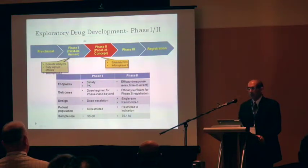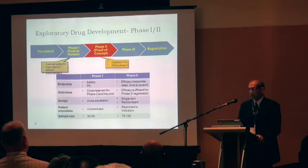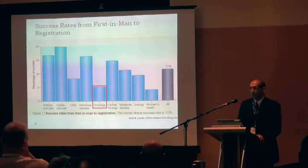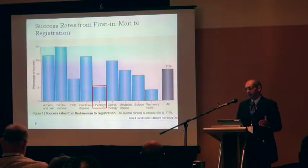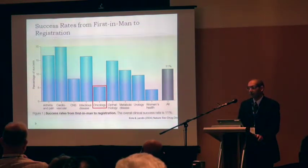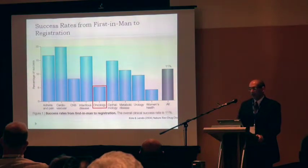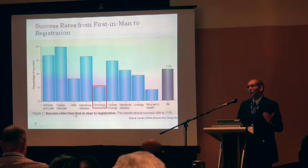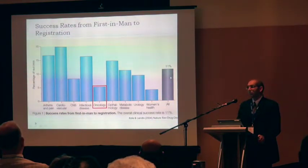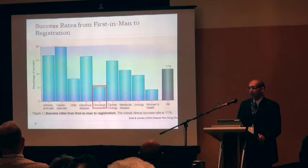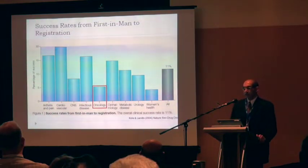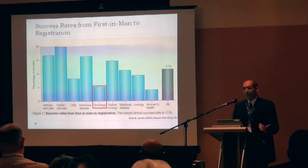Proof of concept is really where the meat of the matter is, because what we want is enough confidence to go forward into phase three, which is very expensive. When you look at the databases over the last 10–15 years, even though we've had tremendous scientific advances in understanding diseases — especially in oncology — the overall success rate from first-in-human all the way through registration is about 11%, and in oncology it's only about 5%. There's a great amount of attrition, and attrition in the pharmaceutical industry means a lot of money.